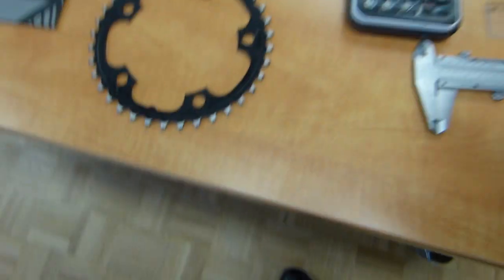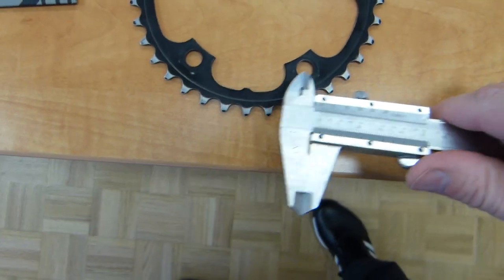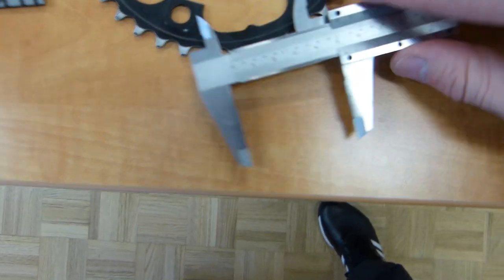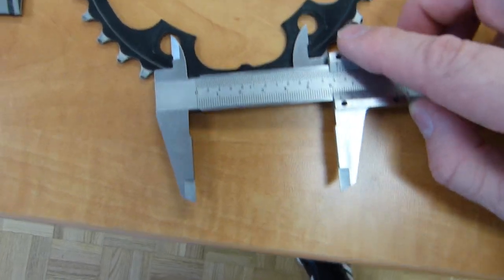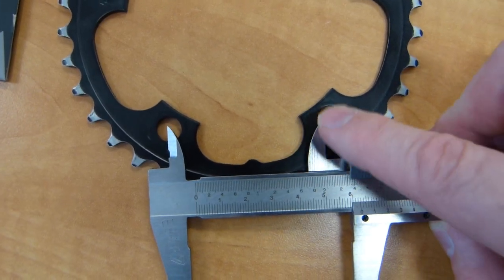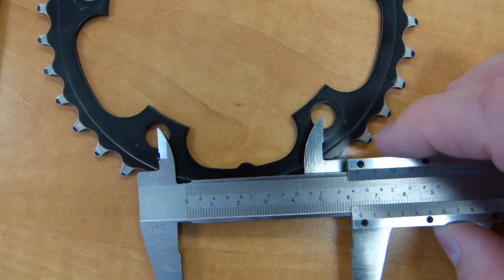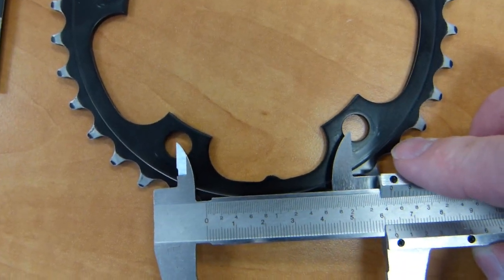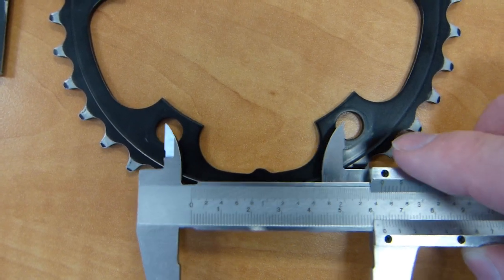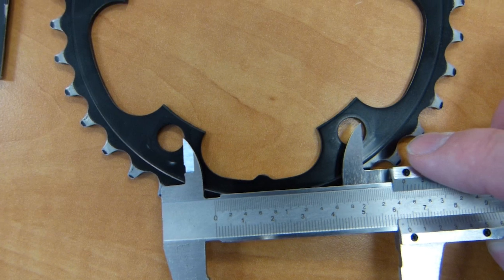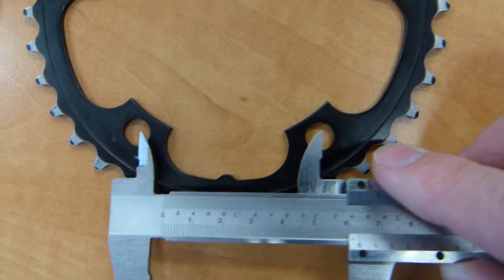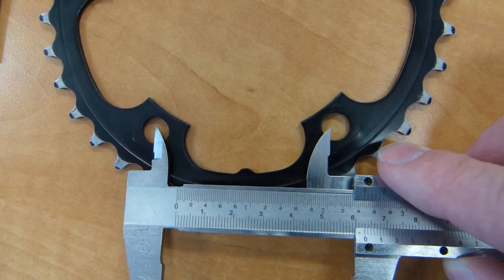The measurement needs to be taken from bolt hole center to bolt hole center. Typically with the graduations of the characters, they're a pretty good indicator of this. Go from left side of the hole to left side of the hole, or right side of the hole to right side of the hole, because it's the same as center to center.